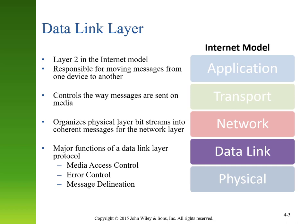The Data Link Layer is Layer 2 in both the Internet and OSI model. It is directly above the physical layer, and it is the layer of the network stack responsible for how we move messages across our network — how we control the way messages are sent on particular media, and how we organize physical layer bitstreams into coherent messages. We'll be discussing Media Access Control, Error Control, and Message Delineation.